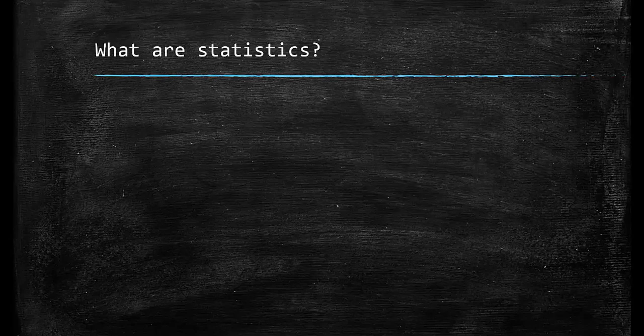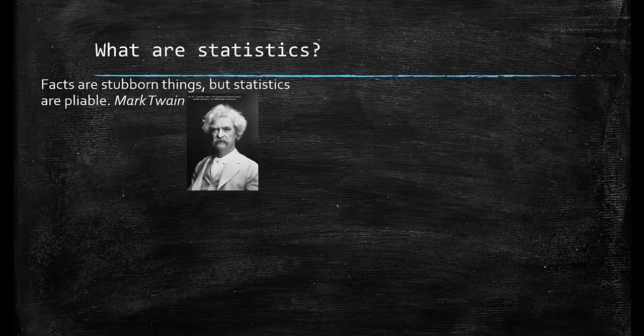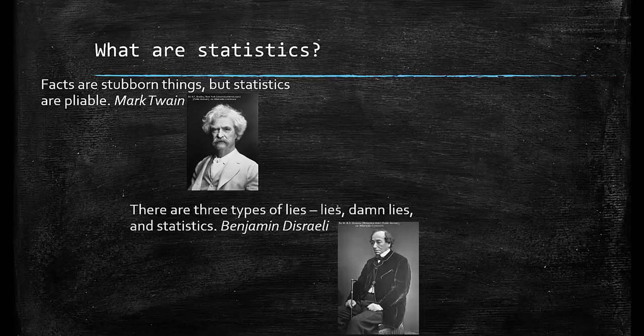Now let's move on to statistics. Mark Twain links us from facts to statistics by noting, "Facts are stubborn things, but statistics are pliable." Benjamin Disraeli opined, "There are three types of lies: lies, damn lies, and statistics."